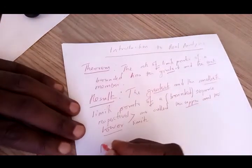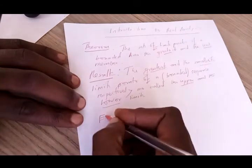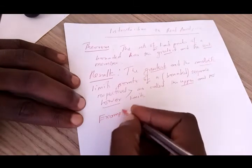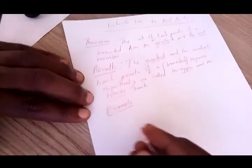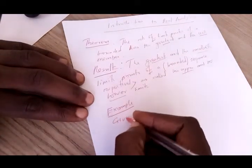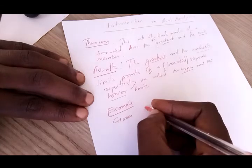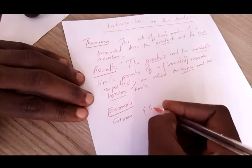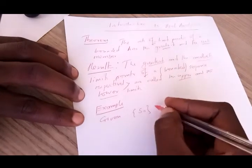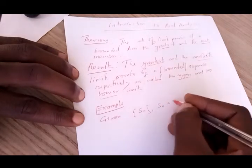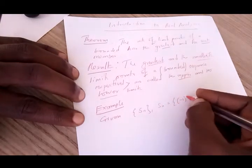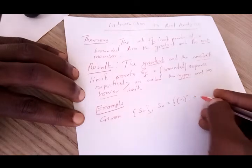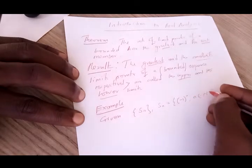This has to be illustrated, so I will look at some examples. Imagine we are given a sequence Sn where Sn is equal to (-1)^n, where n is a member of the natural numbers.